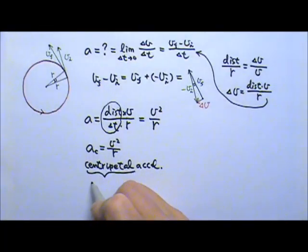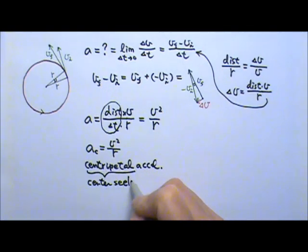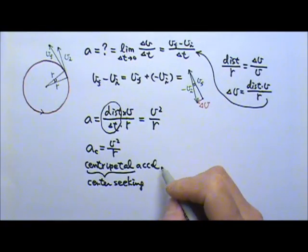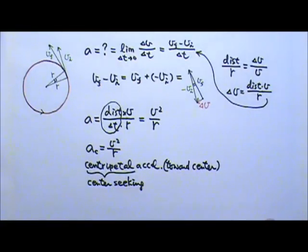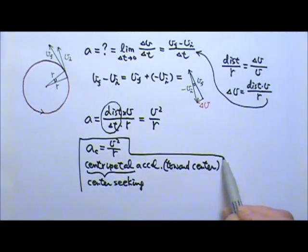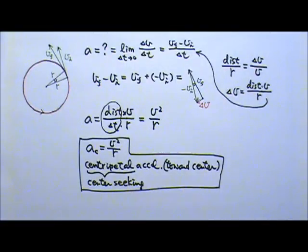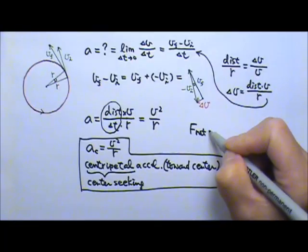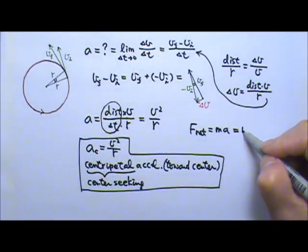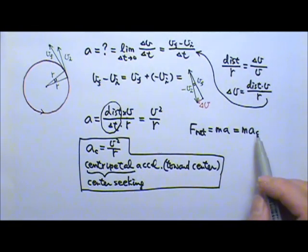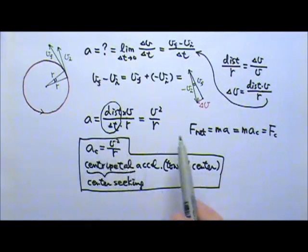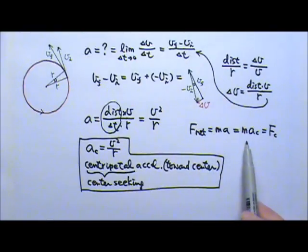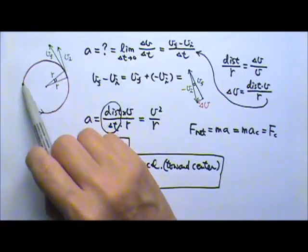The word centripetal means center-seeking — it just means it's towards the center. The centripetal acceleration always goes towards the center. This is the equation for the acceleration. Because net force equals ma, if this object has centripetal acceleration, that means there must be a net force to provide this acceleration. We call this force centripetal force, and the object needs this net centripetal force to stay in circular motion.